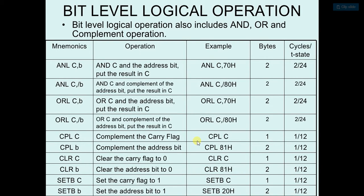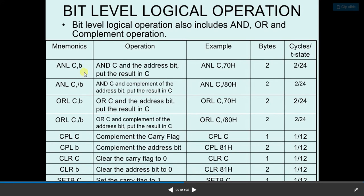Here, ANL C, B — this instruction will AND the C register with the address bit and put the result in C. This is the addressing mode; there are different addressing modes available for these operations.